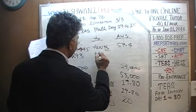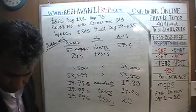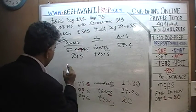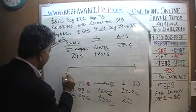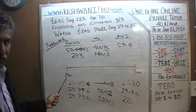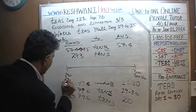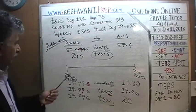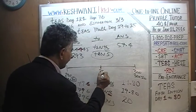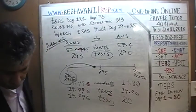293 rounded to the nearest tens. The units digit 3 is less than 5. If we look at this on a number line, 290 has 29 tens and 300 has 30 tens. Right in the middle is 295. Since 293 is less than 295, we round it down — it becomes 290.